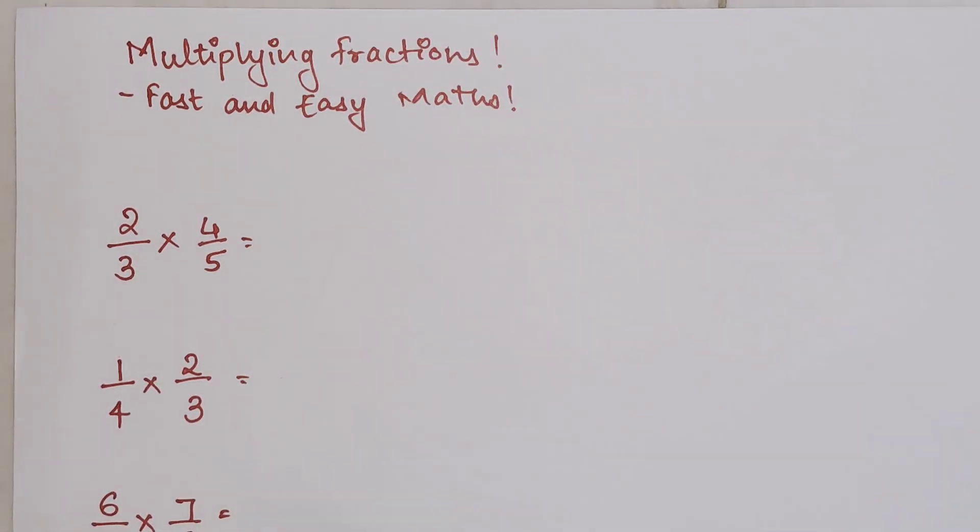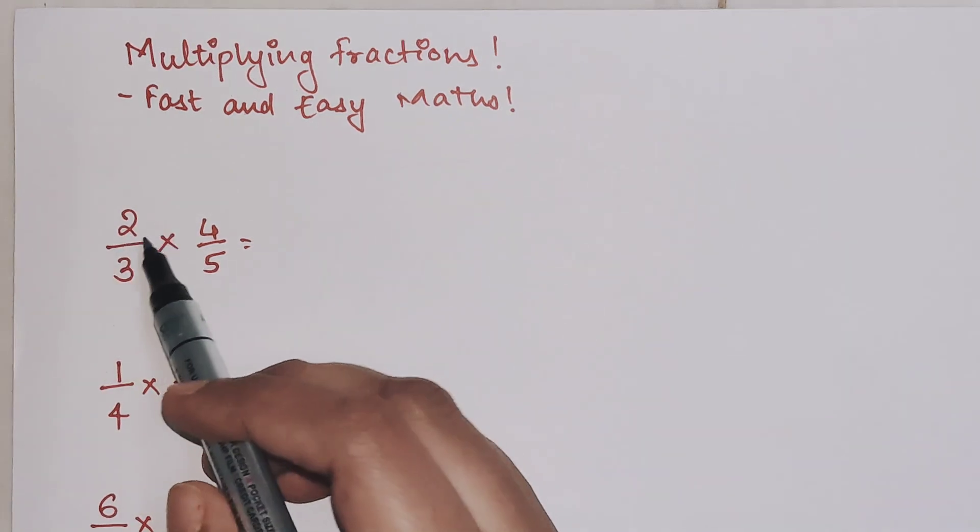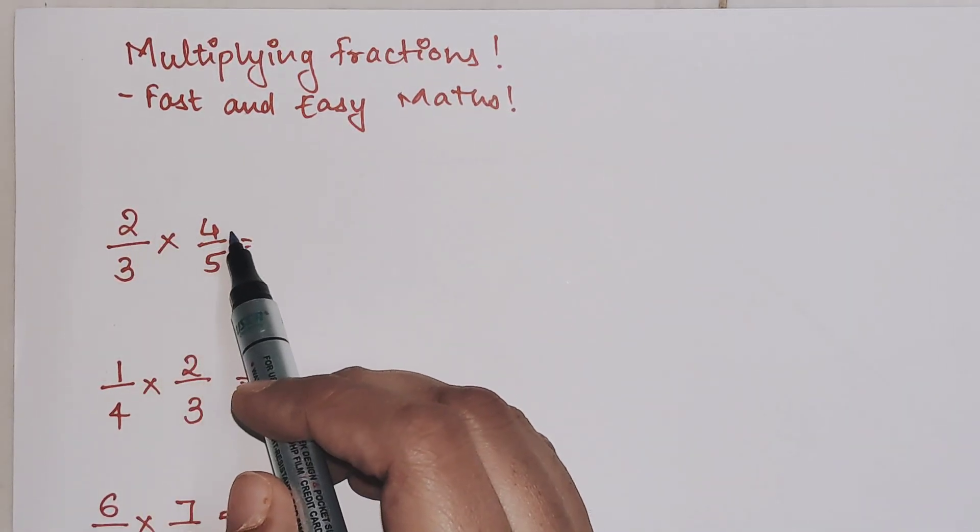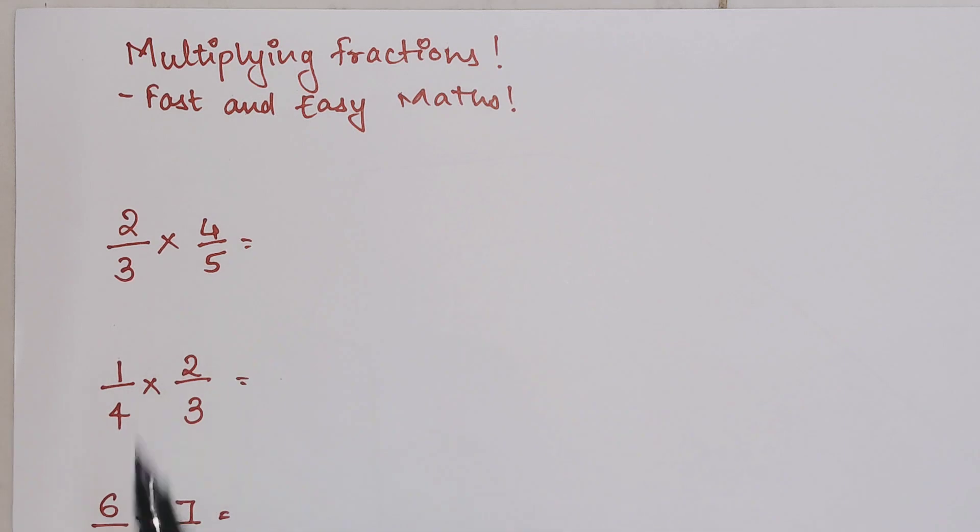This is one of the easiest operations in fractions. It is very simple. You just have to multiply the numerator with the numerator and the denominator with the denominator.